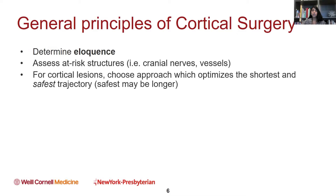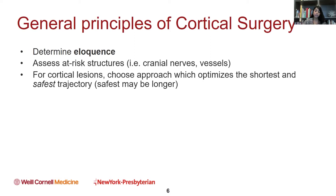For cortical lesions, we generally try to choose an approach optimizing both the shortest and the safest trajectory. We like to say: choose the shortest path because you want to go through the least amount of brain to get to anything. If a tumor comes to the surface, you want to start your opening right at that surface, minimizing manipulation of the brain. In some cases, for deeper tumors, a short path going through an eloquent area means it might make more sense to take a much longer path through a non-eloquent area in order to preserve function.